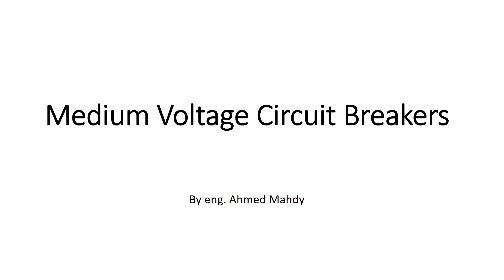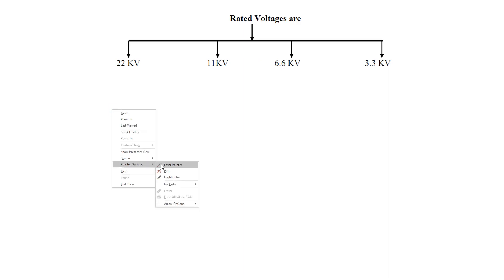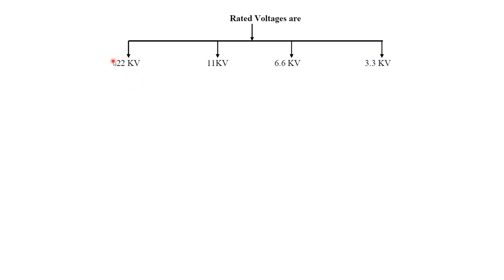In this lesson we will discuss the medium voltage circuit breaker — a quick tutorial on how to select one. First, let's understand the rated voltages considered as medium voltage: 3.3 kV, 6.6 kV, 11 kV, and 22 kV. These are the different levels for medium voltage, and when we operate at them, we are operating at medium voltage.